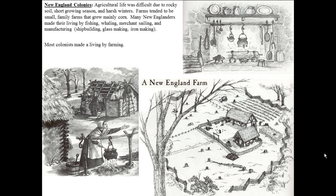Most people in New England lived on the coast, not so much inland. If they were inland, they had very small farms they survived from. If they were on the coast, they were into shipbuilding, fishing, and related trades. Most colonists made a living by farming, and especially those inland survived by farming — farms were small.